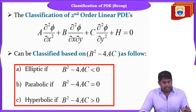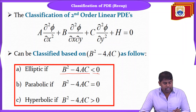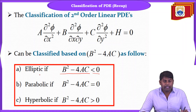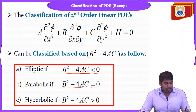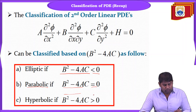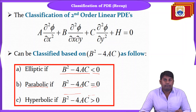The criteria are: if b² − 4ac < 0, we say it is an elliptic equation; if b² − 4ac = 0, it is a parabolic equation; and if b² − 4ac > 0, it is a hyperbolic equation.